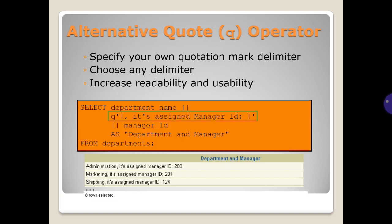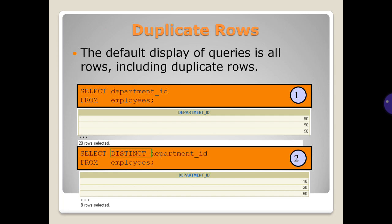The concatenation operator links columns or character strings to other columns. It is represented by two vertical bars and creates a resultant column that is a character expression. A literal is a character, number, or date included in the SELECT statement. Date and character literal values must be enclosed by single quotation marks. You can specify your own quotation mark delimiter to increase readability and usability.